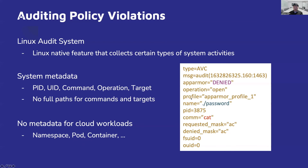In addition, audit logs do not contain the full path of a source and a target. Here, you can see slash password, which is a relative path, and cat, which is just a process name. We don't have the full path of cat, we don't have the full absolute path of password. So, how can we get the full information, including the metadata for cloud workloads, and the full path of a source and a target?